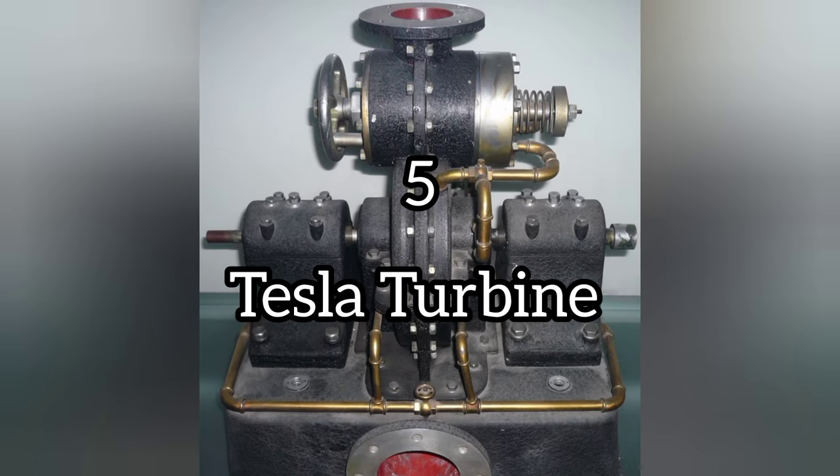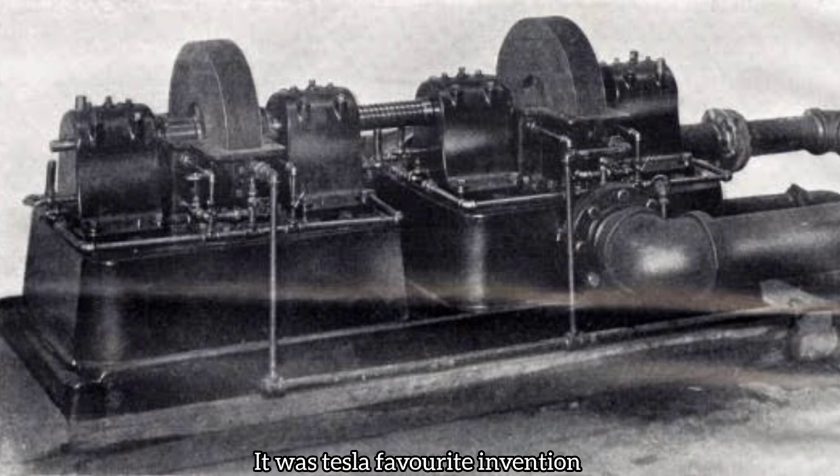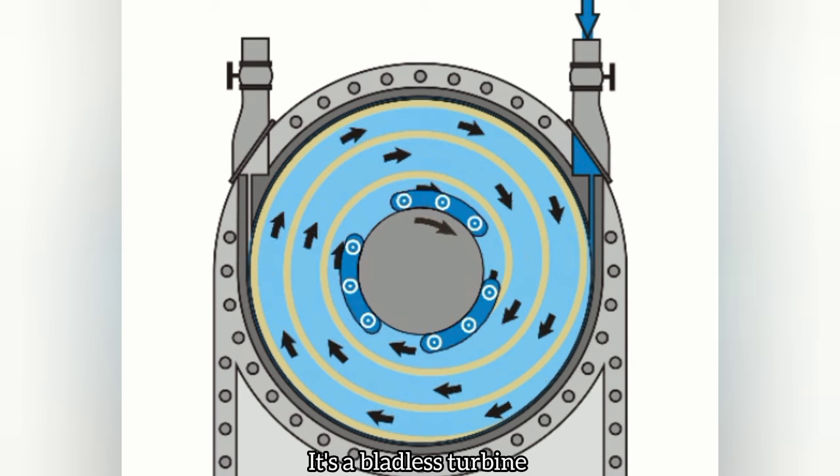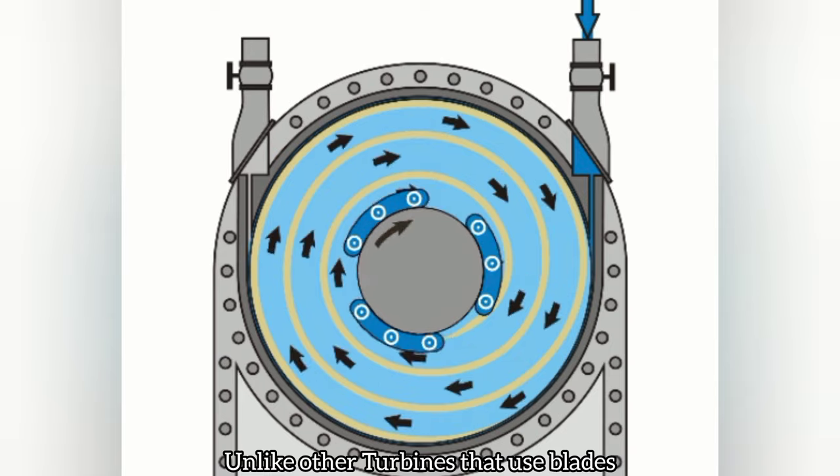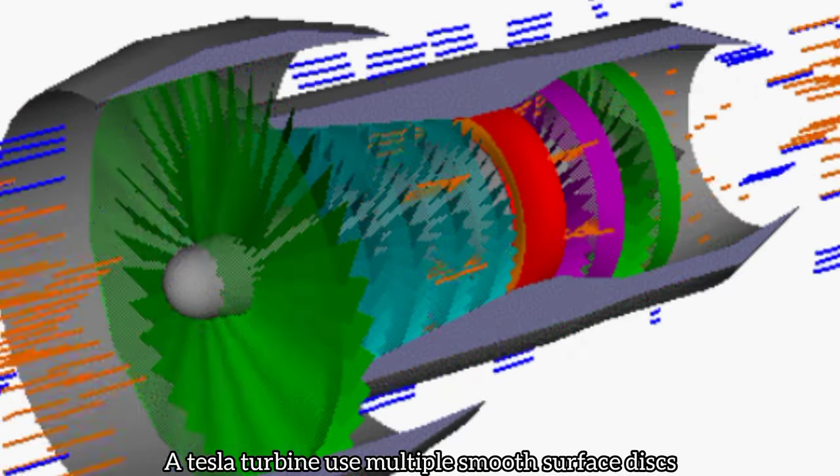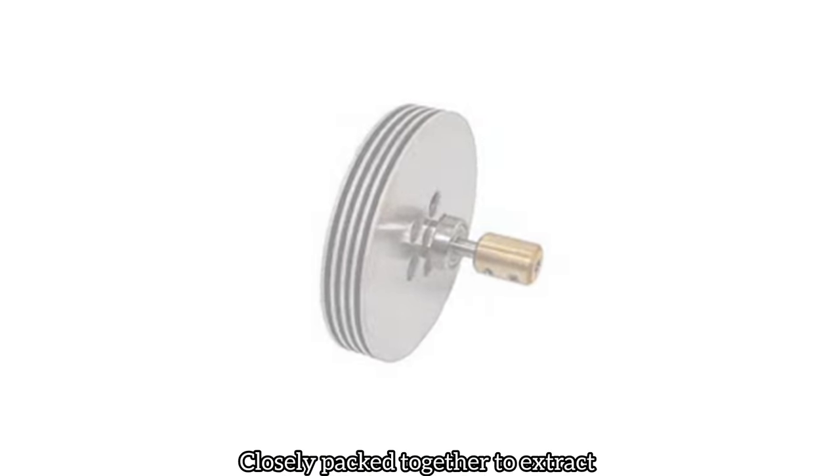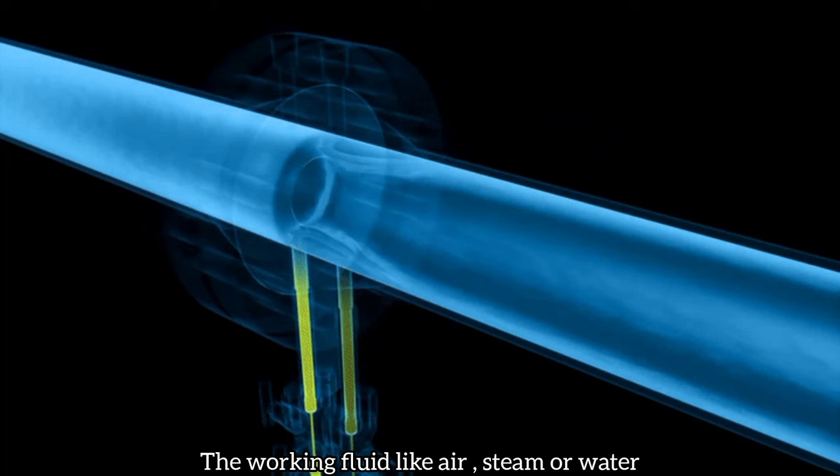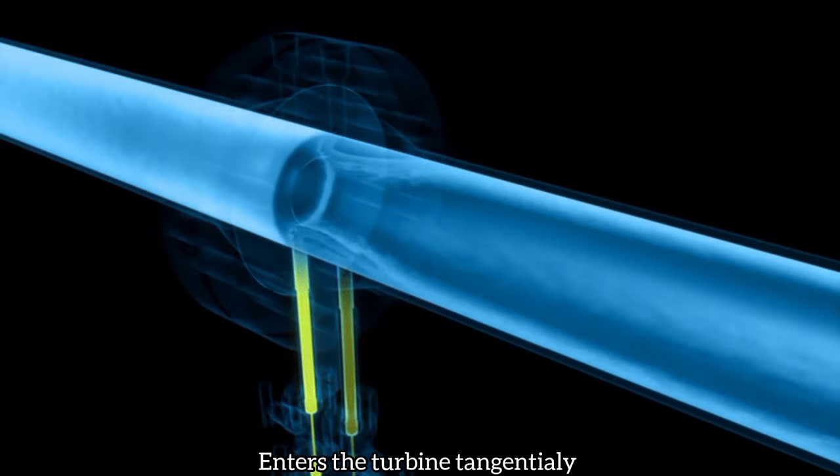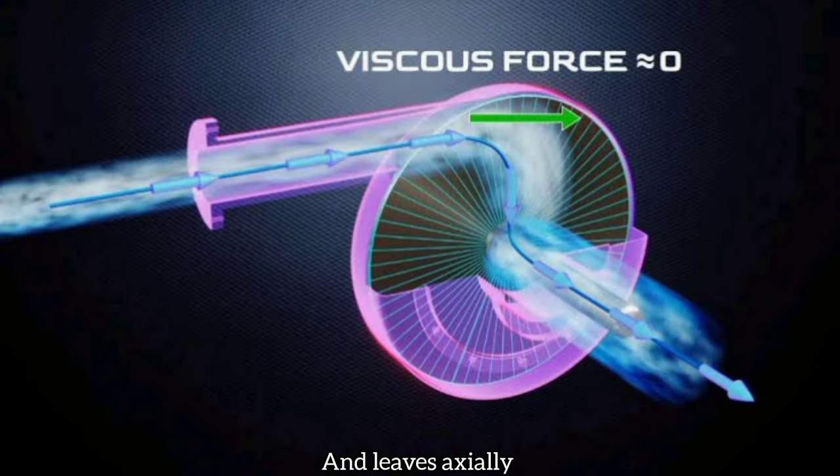The next invention is the Tesla turbine. It was Tesla's favorite invention. Tesla turbine is a bladeless turbine that works on the principle of boundary layer adhesion. Unlike other turbines that use blades, a Tesla turbine uses multiple smooth surface disks that are closely packed together to extract the fluid energy. The working fluid, like air, steam, or water, enters the turbine tangentially and leaves it axially.